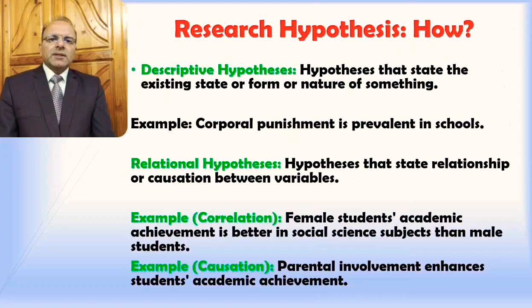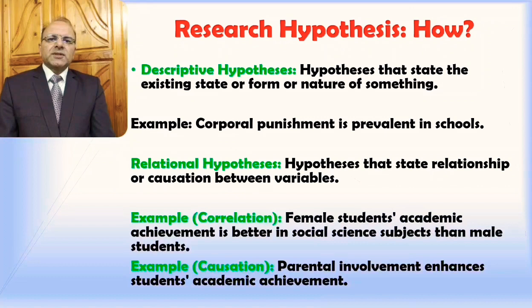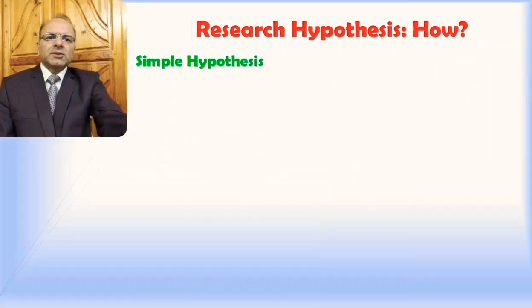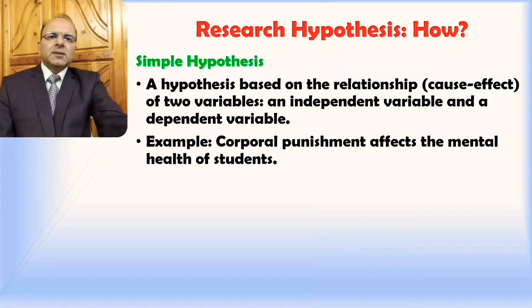In the second example of causation: parental involvement enhances students' academic achievement. Here you see two variables — parental involvement and students' academic achievement — and one is presented as the possible cause of the other. This is an example of the causation type of hypothesis.